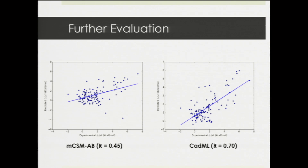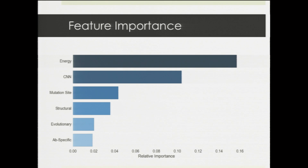To further evaluate, I compared CatML against the next best method, MCSM-AB, on a separate dataset of about 114 mutations. MCSM-AB had a correlation of 0.45 while CatML achieved 0.7 — again confirming higher accuracy in predicting favorable and harmful mutations. Analyzing which features drive this performance, I found that the changes in potential energies after a mutation were the most significant, but the CNN was the second most important feature. Extracting information from the surrounding environment using deep learning proved extremely effective and allowed CatML to outperform previous methods.